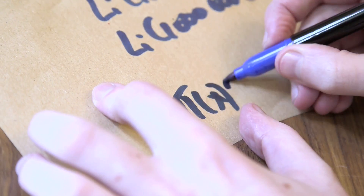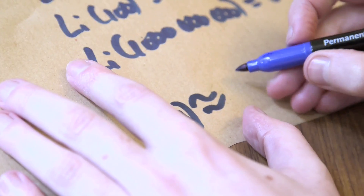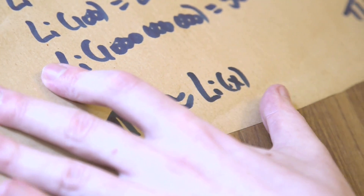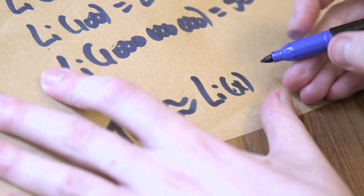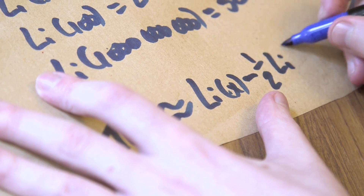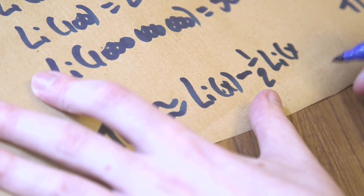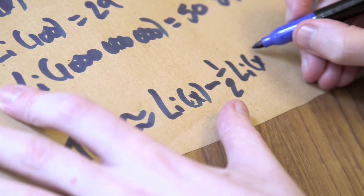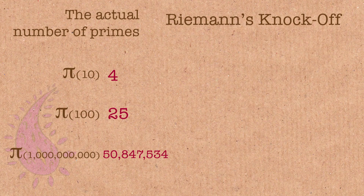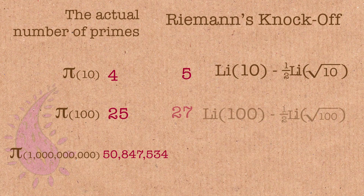Riemann — another famous mathematician, from Riemann's hypothesis — had this idea that you could use pi of x approximately equal to this same thing, the logarithmic integral, minus one half of the same logarithmic integral of x to the power half — so square root. So it's just knocking off a bit, just taking a bit off.